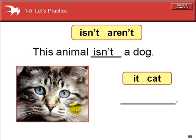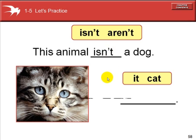This animal isn't a dog. It is not a dog. The apostrophe takes the place of the O. It's a cat.